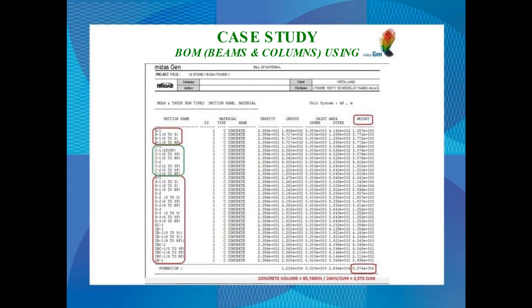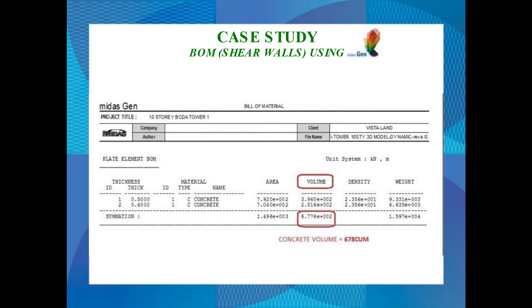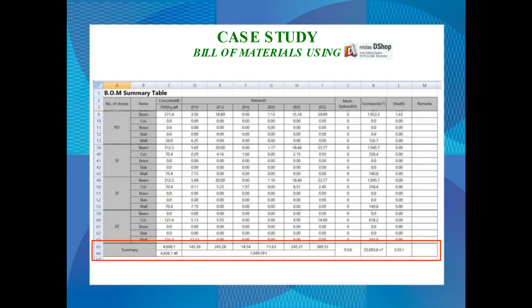For the bill of materials for this project, we first used the MidasGen facility to generate the total volume of concrete for all columns and beams, and the total volume of concrete for the shear wall. We also used MidasDshop as another option to generate all the concrete volumes, the kilogram weight of steel, and the total area of the formwork system. We use both options because MidasDshop is the later development and is better than MidasDesign Plus when it comes to producing bill of materials and detailing.